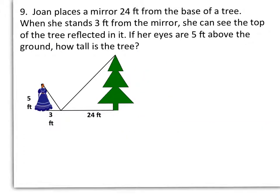In number 9, Joan places a mirror 24 feet from the base of a tree. When she stands 3 feet from the mirror, she can see the top of the tree reflected in it. If her eyes are 5 feet above the ground, how tall is the tree? I'm going to call the height of the tree X. In my first ratio, if I put Joan's distance from the mirror, so 3, over her height 5, then my other ratio has to be the tree's distance from the mirror, which is 24, over the tree's height, which we don't know and I'm calling X. Then take the cross product. 3X equals 120. Divide both sides by 3. We get X equals 40. So the tree is 40 feet tall.